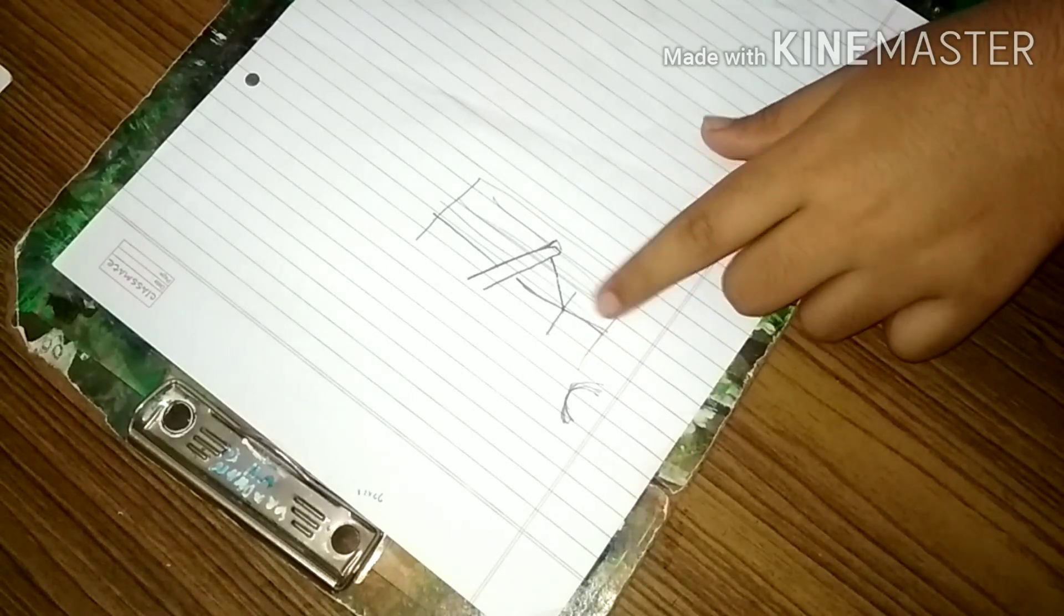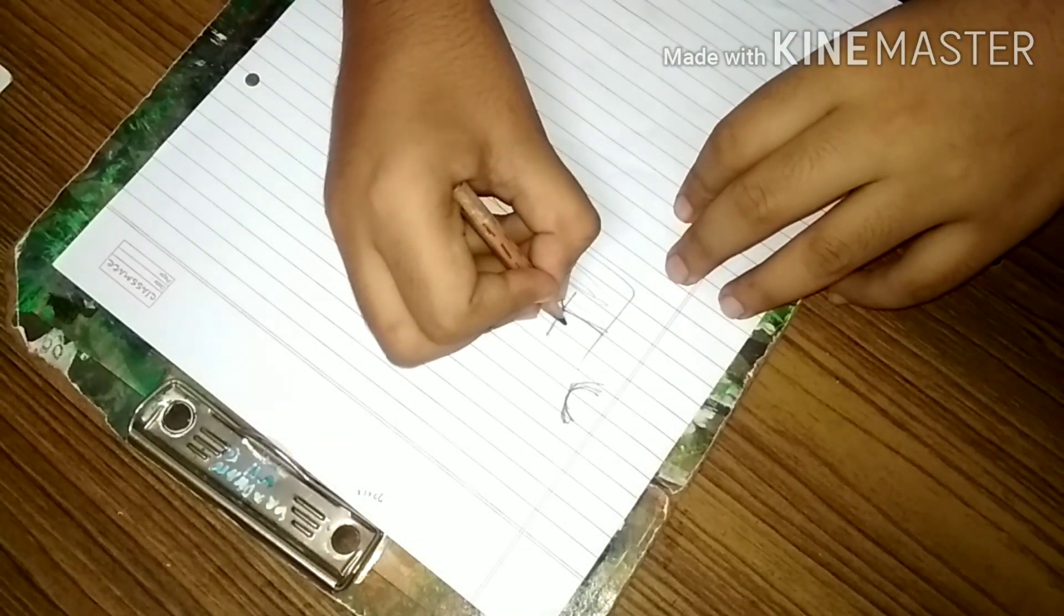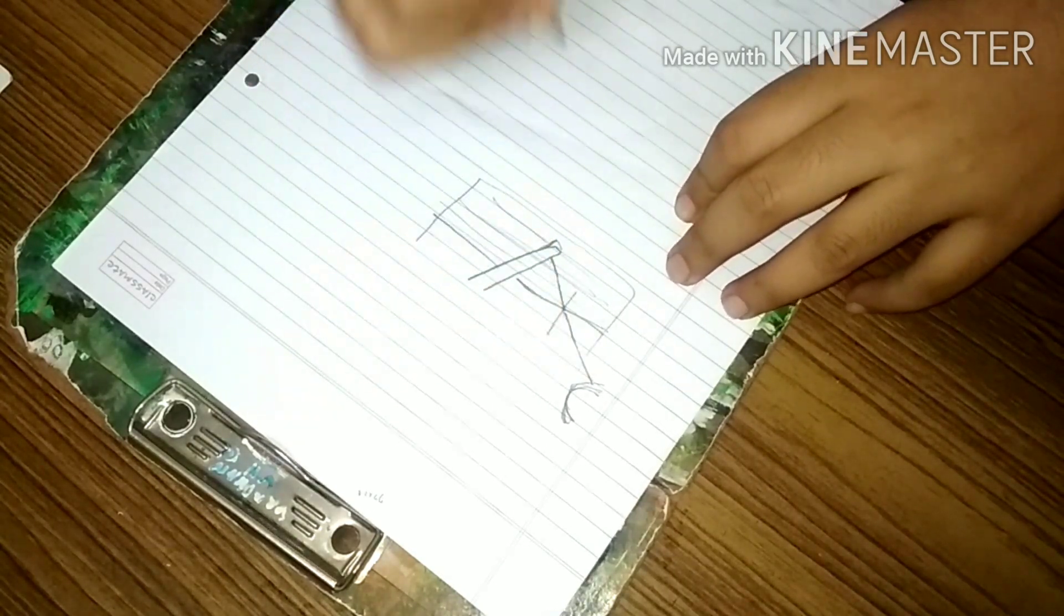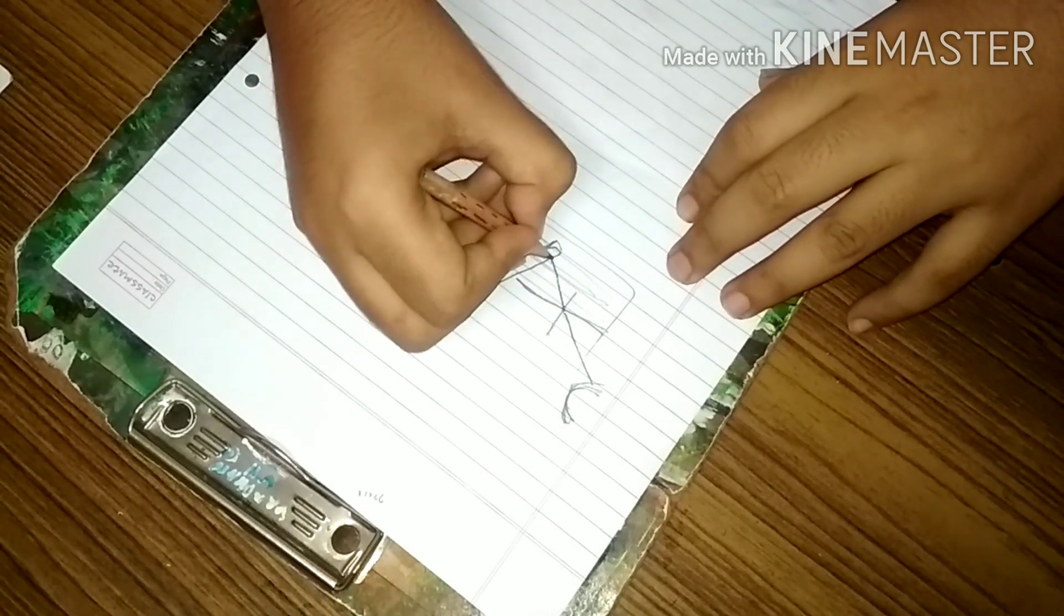So we will make a perpendicular or normal to it. And as it is going from water to air, means denser to rarer, it will bend away from the normal. This will be the original path and it will bend somewhat like this and go like this.